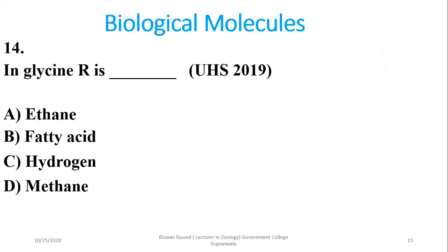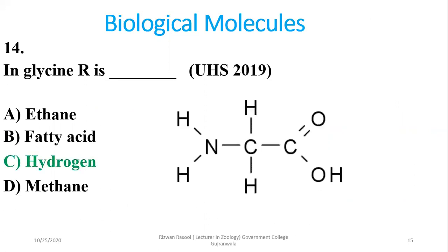Question 14: In glycine, the R group is replaced by hydrogen. The rest of the molecule — other than the common amino acid portion — is simply H.